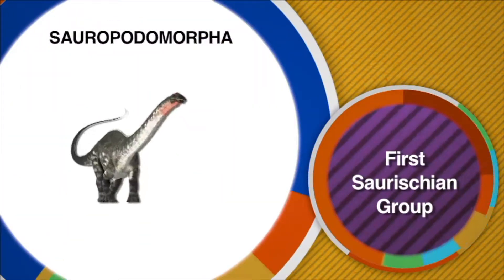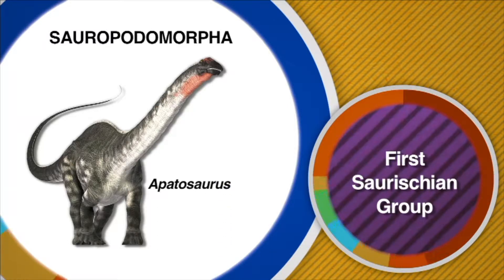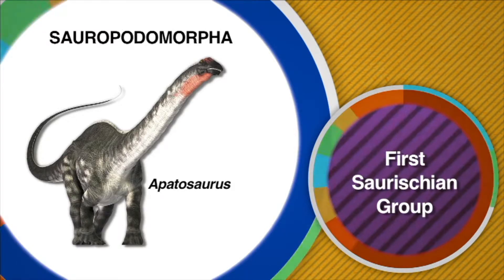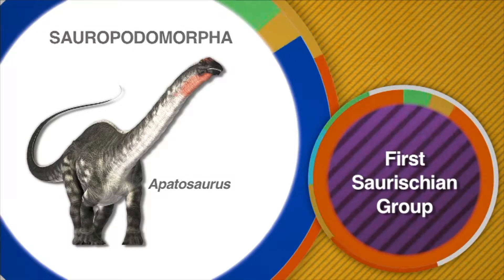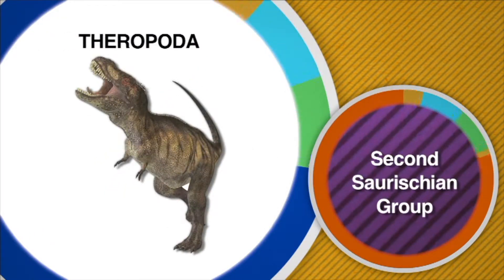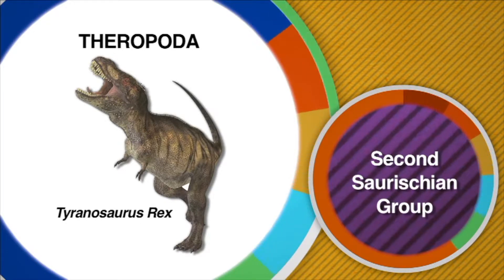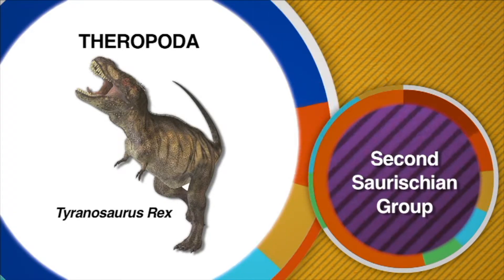The Saurischians are divided into two groups. The first group is Sauropodomorpha. In this group you will find the largest known dinosaurs, like the Apatosaurus, which grew to be about 70 feet long and weighed 30 tons. The second group of Saurischian dinosaurs are known as Theropoda. These dinosaurs have sharp claws and walk on two feet, like Tyrannosaurus rex.